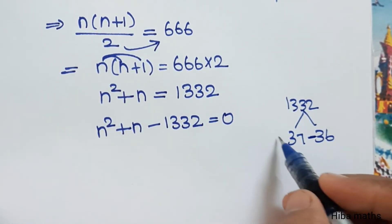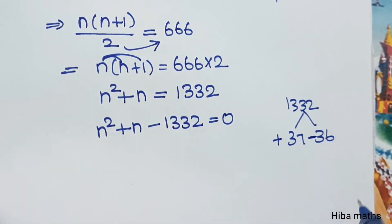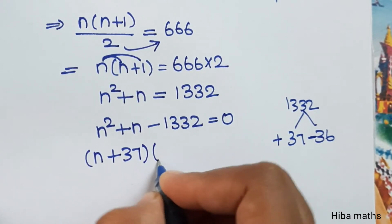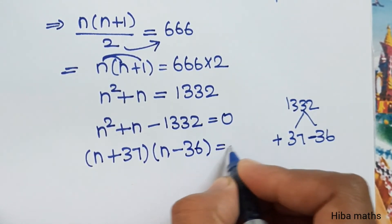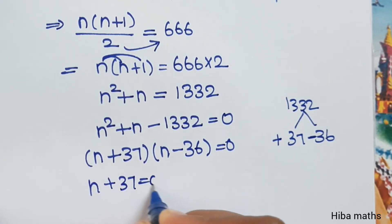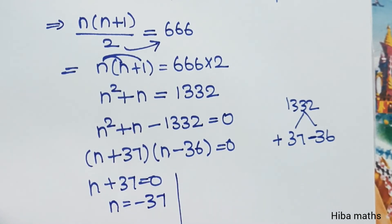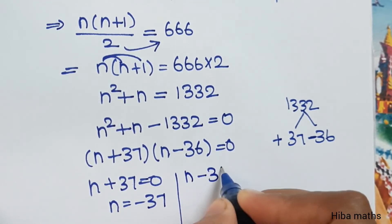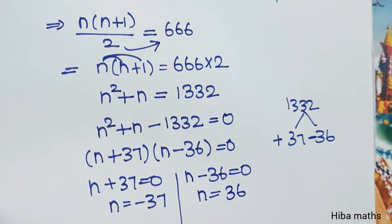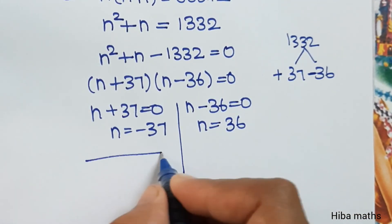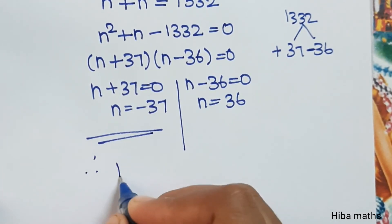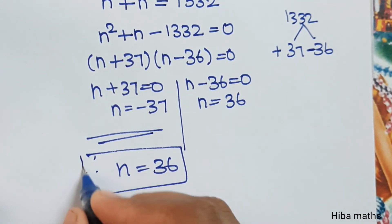So the factors are n plus 37 equals 0 and n minus 36 equals 0. Since a negative value is not valid, n is equal to 36. Therefore, n value is equal to 36.